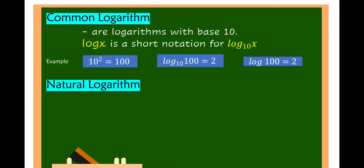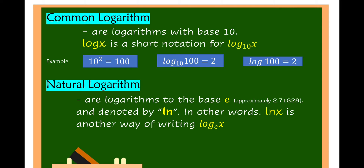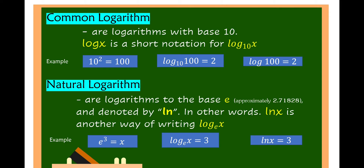Natural logarithms are logarithms to the base of e, that is approximately 2.71828, and denoted by ln. In other words, the natural logarithm of x is another way of writing log of x to the base of e. For example, e cubed is equal to x, so that is the logarithm of x to the base of e is equal to 3, or the natural logarithm of x is equal to 3.